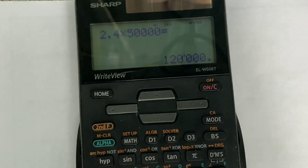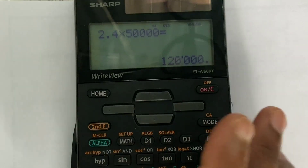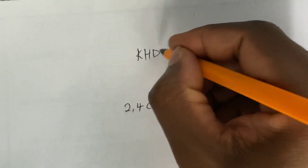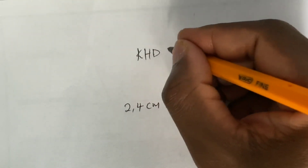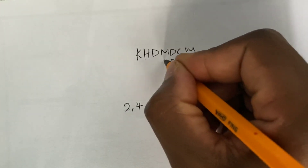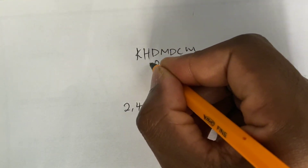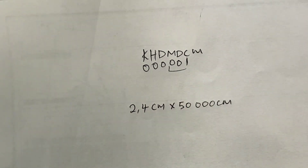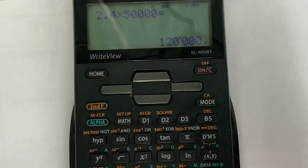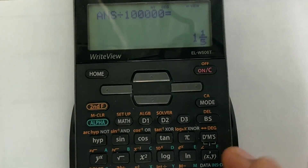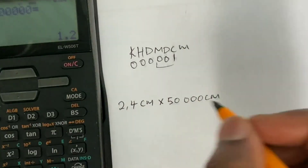When measuring distance with a ruler, you multiply by the map scale. The map scale is 1:50,000. Using the unit conversion — centimeters to kilometers (kilo-hecto-deca-meter-deci-centi) — I calculate: 2.4 × 50,000 = 120,000 centimeters, divided by 100,000 = 1.2 kilometers.